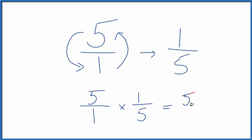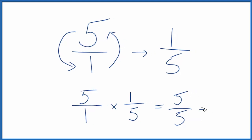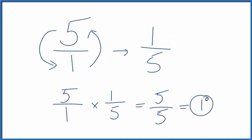5 times 1 is 5. 1 times 5, that's 5. And 5 divided by 5, that equals 1. So we did the first part correctly. The reciprocal of the number 5 is 1 fifth.